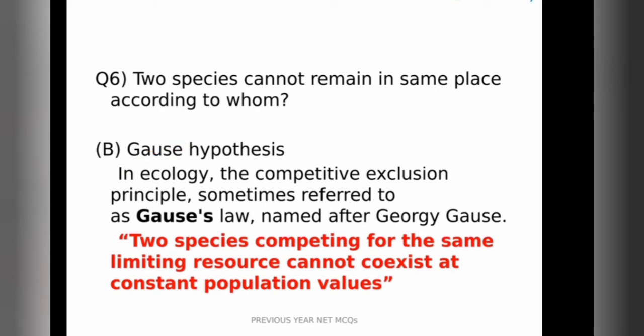In ecology, the competitive exclusion principle, sometimes referred to as Gauss' Law because it is named after the scientist Georgi Gauss, stated that two species competing for the same limiting resource cannot co-exist at constant population values. So it is important as per ecology is concerned.